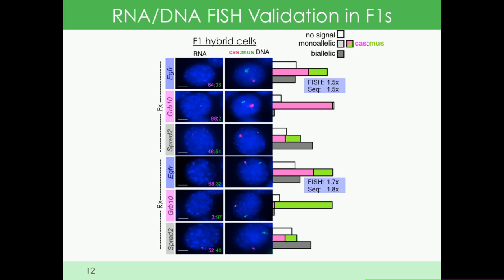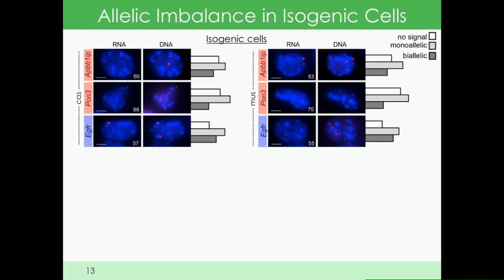So this looked like EGFR has a genotypic preference at the transcription level for the cast allele. We were curious if we looked at the parental cells that were isogenic, would we see the same preference for the cast allele?